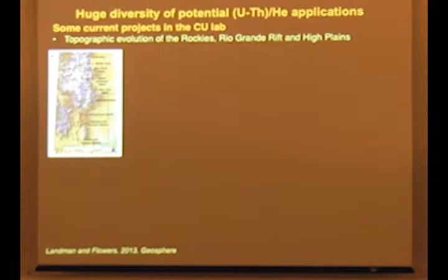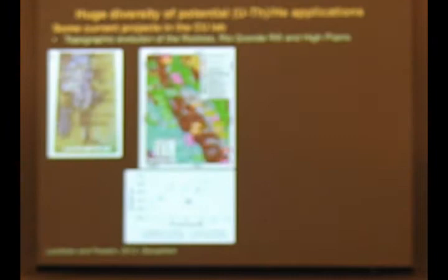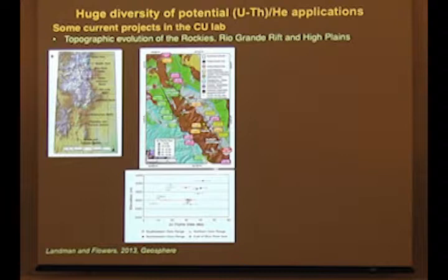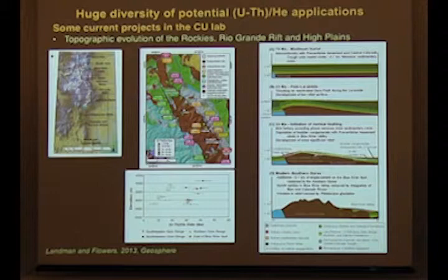One of our aims has been trying to understand the topographic evolution of the interior of the U.S. Cordillera. I want to highlight work that Rachel Landman did during her master's degree. She worked in a range representing the northernmost extent of the Rio Grande rift, doing a more classical apatite helium dating of a vertical transect study by dating samples throughout the exposed Precambrian basement in this rift flank uplift. We obtained vertical elevation profiles, and from this dataset we were able to reconstruct the post-70-million-year history involving Laramide deformation and subsequent rifting effects.